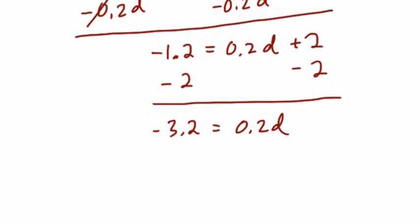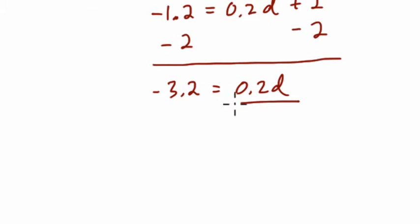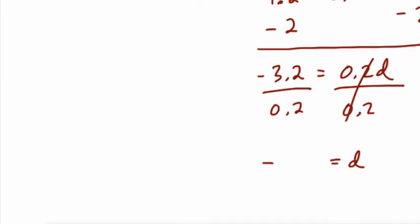And you can use a calculator here, but I like to think that when we divide both sides by 0.2, so first of all, I know negative 3.2 divided by 0.2. I know it's going to be a negative quotient, so I put that there first, so I don't lose track of it. These 0.2's cancel out. Well, and I like to think of 32 divided by 2 first, and that's 16.